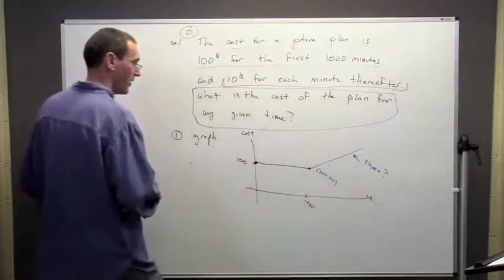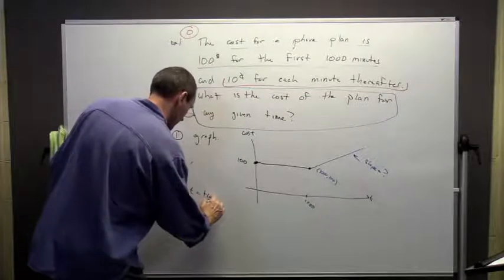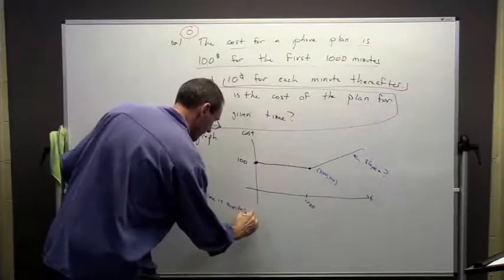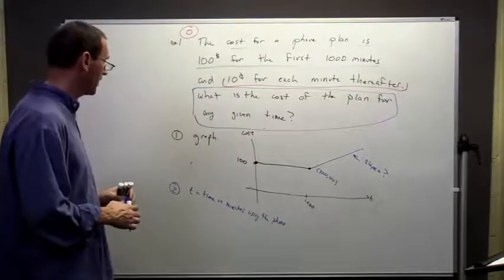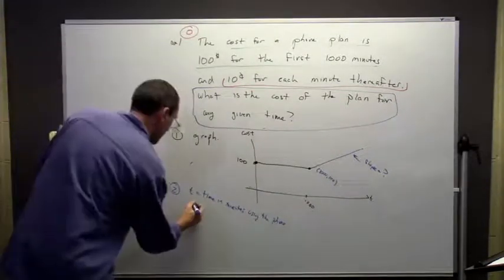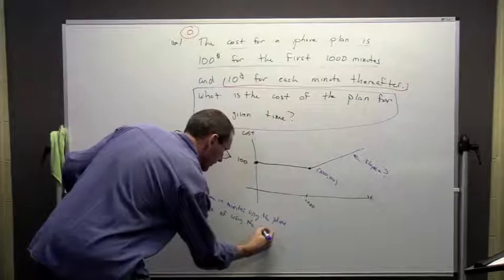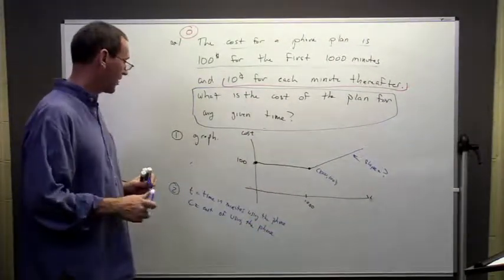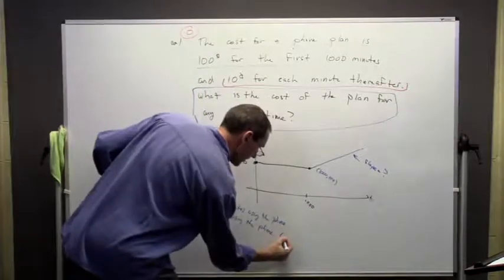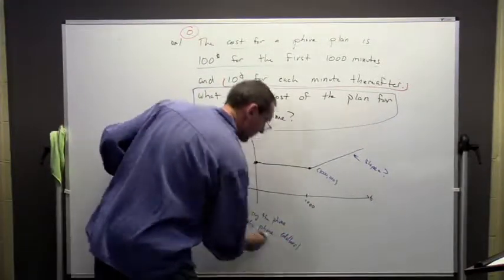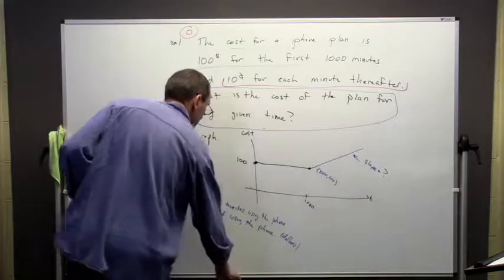The next step is to figure out what our variables are. I'm going to define T to be the number of minutes that we've used the phone — units are minutes. I'm going to define C to be the cost of using the phone — and I'm going to keep those units in dollars. So those are the only two variables I have here.